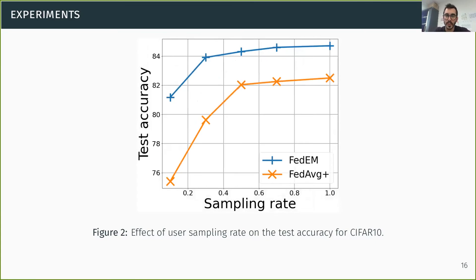Our algorithm is also compatible with client sampling, user sampling. And so we have compared that, for instance, here against federated averaging plus, and we see that our approach tends to be more robust to user sampling, especially for small sampling rates.